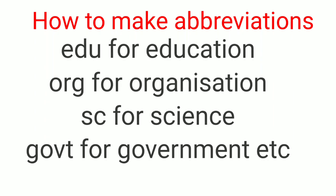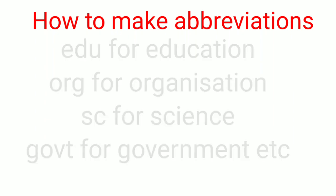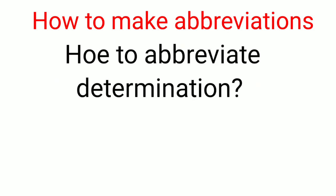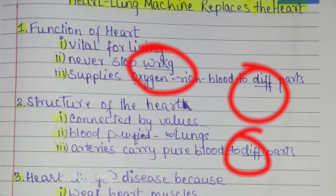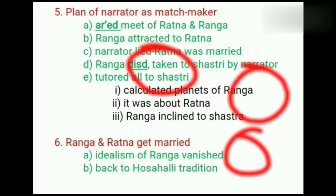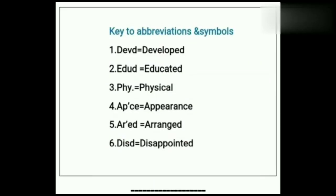General abbreviations like 'edu' for education, 'org' for organization, 'sc' for science are already standard. If you find a new word to abbreviate, take the first two letters and the last two letters of the word, put an apostrophe in between — that abbreviates the word. Write the same in the abbreviation section and underline all abbreviations used in the notes. This completes our noting section.